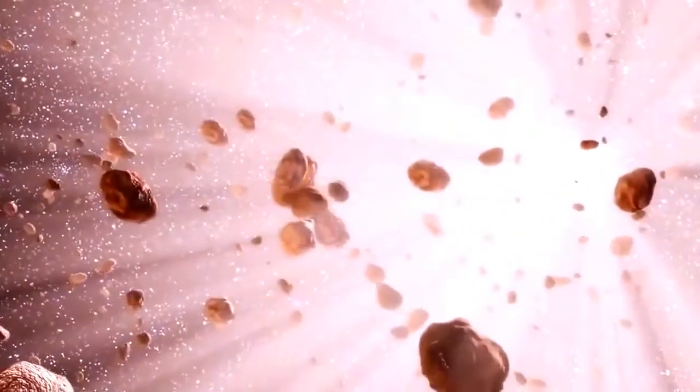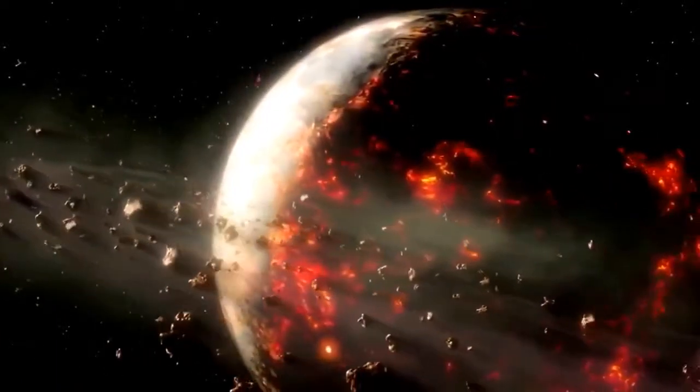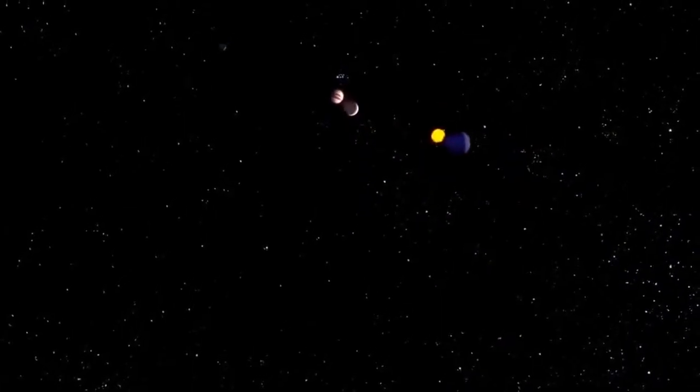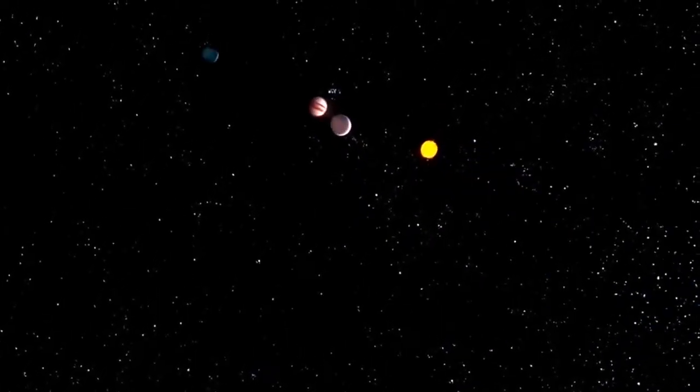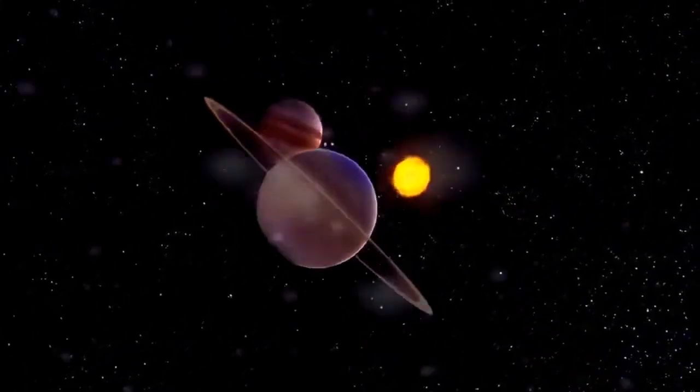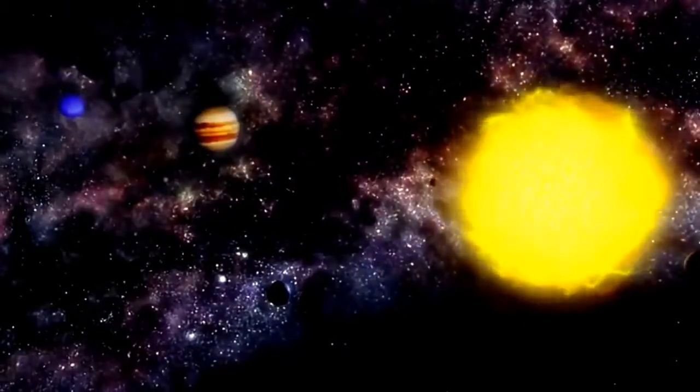The remaining stellar material swirled around the newborn sun. It collided and coalesced, eventually sculpting the eight planets in our solar system including earth. When that happened, a stellar wind turned on and cleared out all the extra material, leaving the planets that we have today.